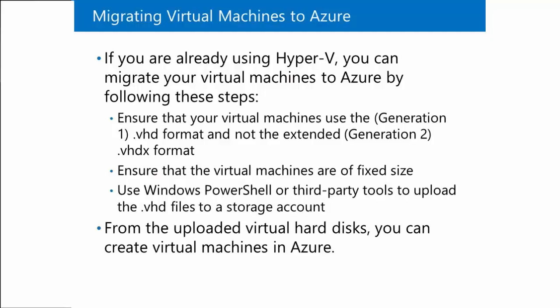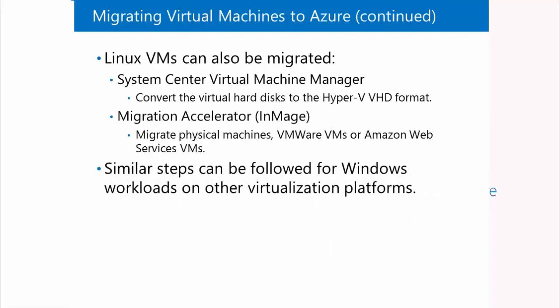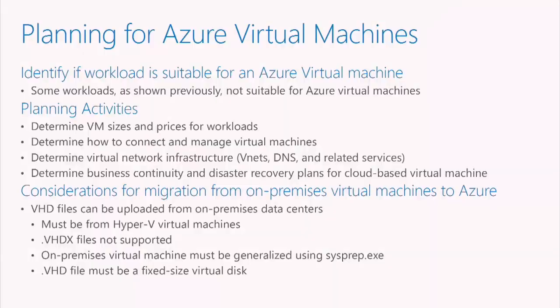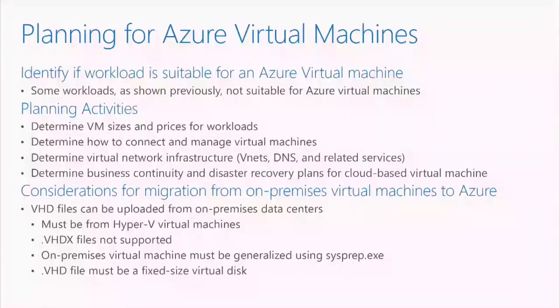If we're thinking about doing a migration, there are some things to keep in mind. If we're going to upload the virtual machine, we need to convert it to a VHD and generalize it using sysprep. If it's a running virtual machine already in our environment, it has to be sysprepped before it can go into Azure — in many cases that may prevent migration if the application cannot be sysprepped. It also has to be a fixed-size virtual disk, though the upload process will convert it to a fixed size on the way up.